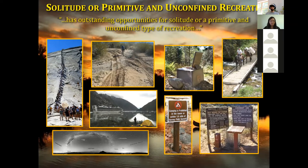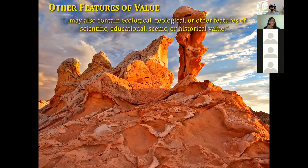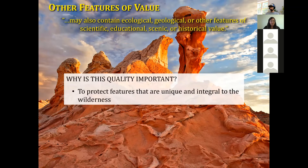Examples of things that might degrade solitude or primitive and unconfined recreation include hiking far into a wilderness only to encounter a long queue at Half Dome; signs of vehicle or ATV use reminding visitors of human occupation; and signage like distance markers to the next trail junction that undermine self-reliance.